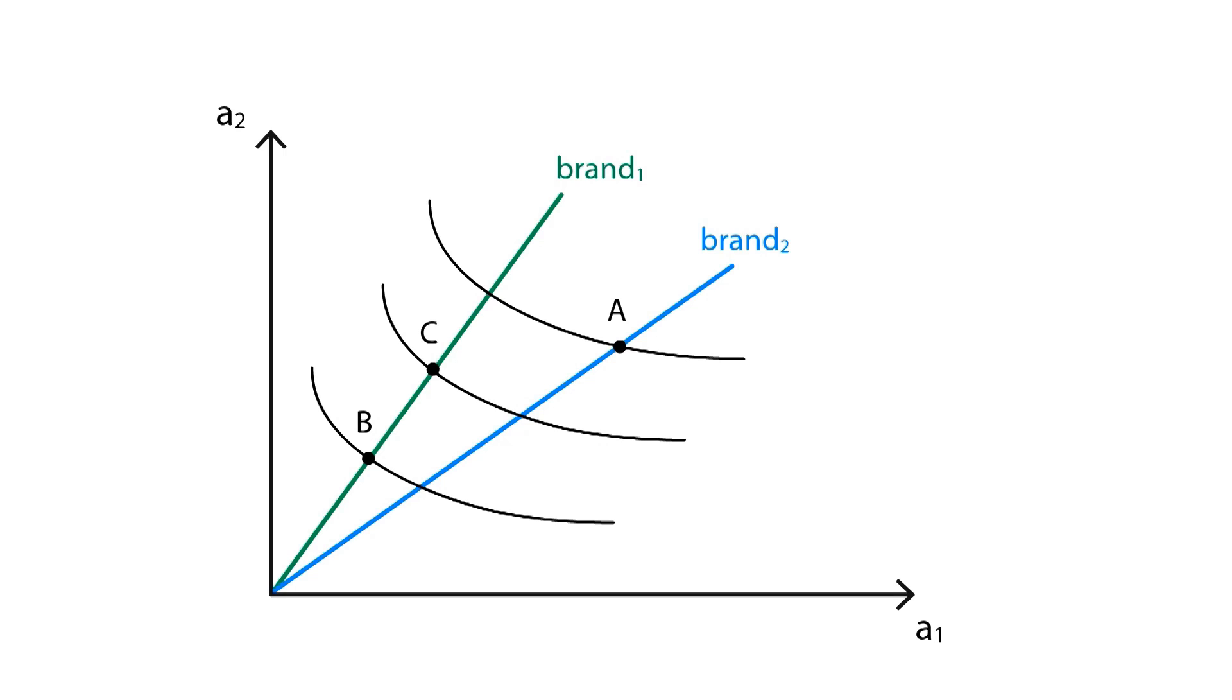However, even though brand1 got cheaper, we'll still consume A, since it remains on a higher indifference curve. As you can see, this theory is perfect to understand things like brand loyalty, since consumers will rather keep buying brand2, even though brand1 got cheaper.